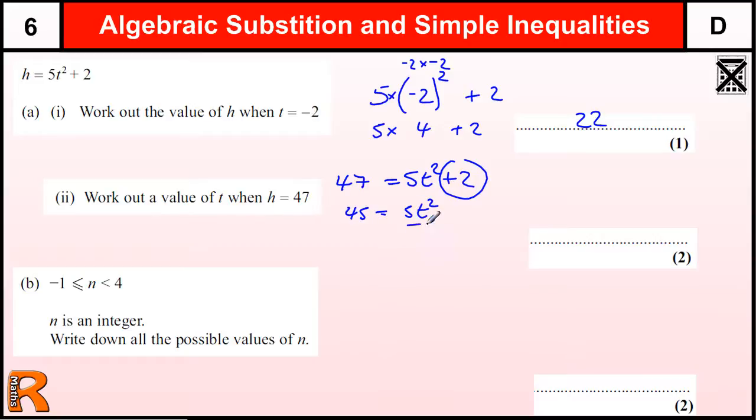We need to divide by 5 to get 9 equals T squared. Then we need to think about what number squared is 9, or we can do the square root. So the square root of 9, which is 3, gives us T.